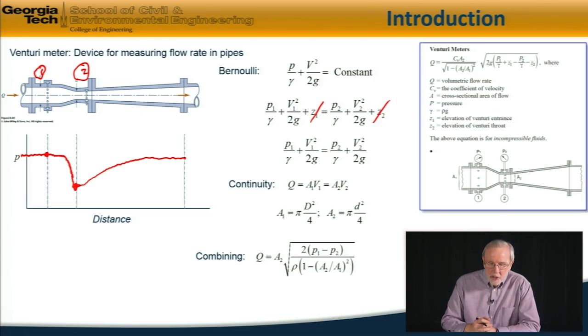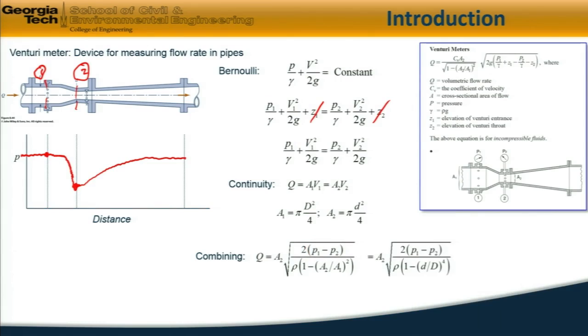The volume flow rate Q is equal to the throat area multiplied by the square root of this expression, where P1 minus P2 is the pressure difference between the upstream section and the throat. And also, we recognize that the areas are proportional to diameter squared. So we can, in turn, write this equation in this form in terms of the upstream and the throat diameters.